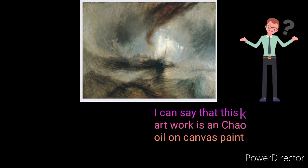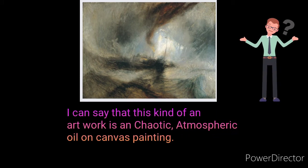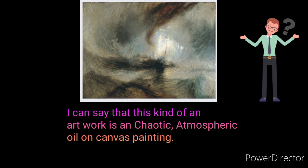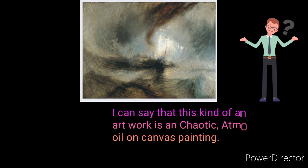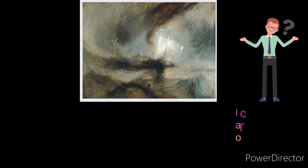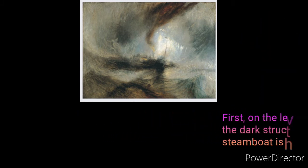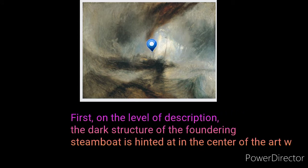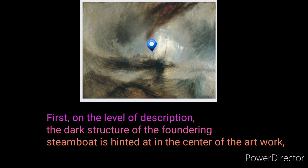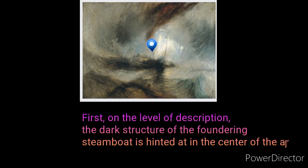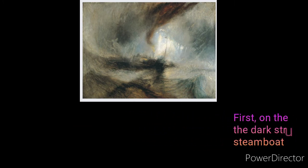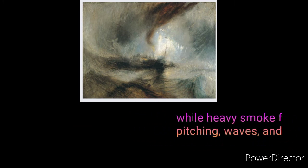This artwork is a chaotic, atmospheric oil on canvas painting. First, on the level of description: the dark structure of the foundering vessel is hinted at in the center of the artwork.